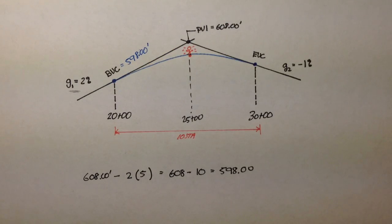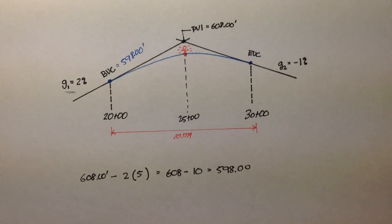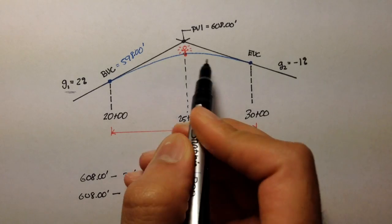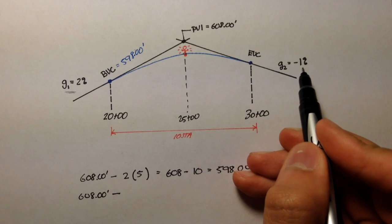Our second question was, what is the elevation of EVC, or the end of vertical curvature? We apply the same grading concept here. 608 minus, because you're going down, a 1% grade.